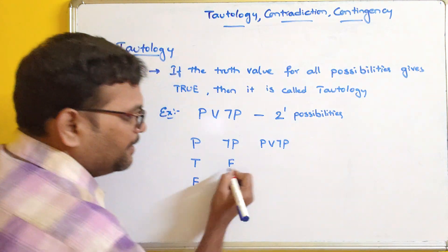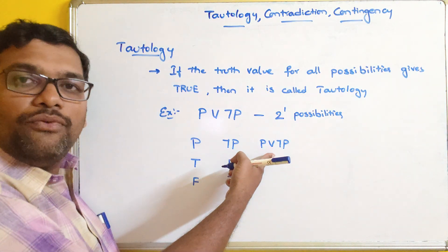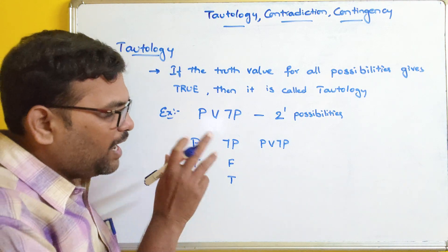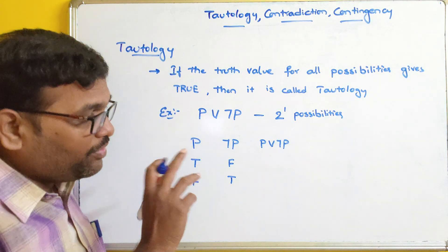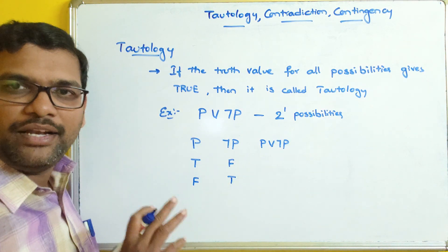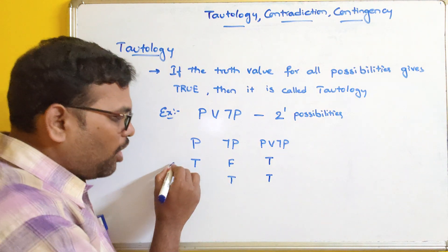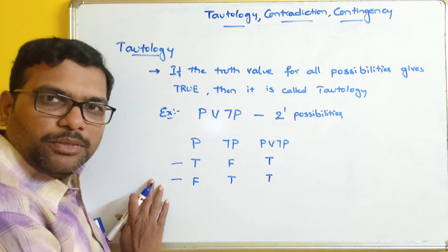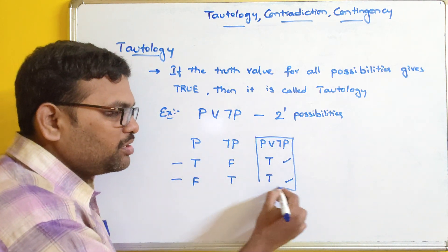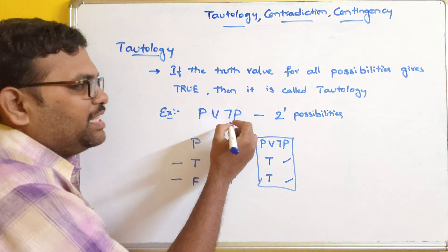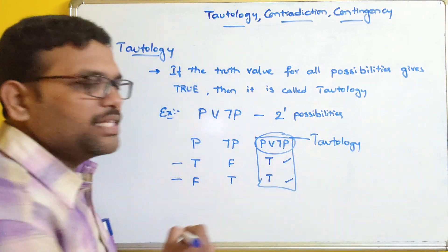If P is true, ¬P will be false. If P is false, ¬P will be true. For the OR operation, if any one of the propositions is true, the result will be true. So true OR false gives true, and false OR true gives true. For all possibilities the result is true — the last column gives all true. So this is called a tautology.